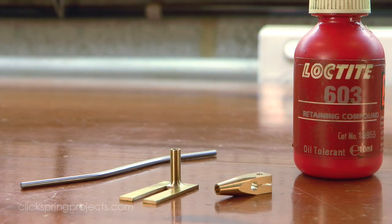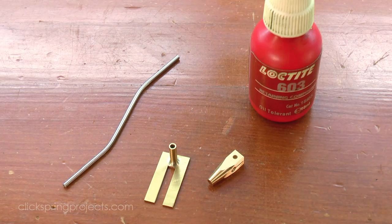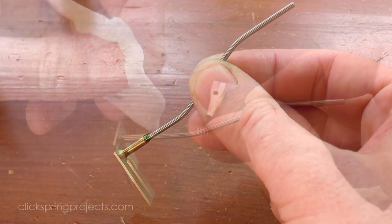The three parts of the crutch assembly are now complete, so a small spot of Loctite on each end is all that's required to bond them together.